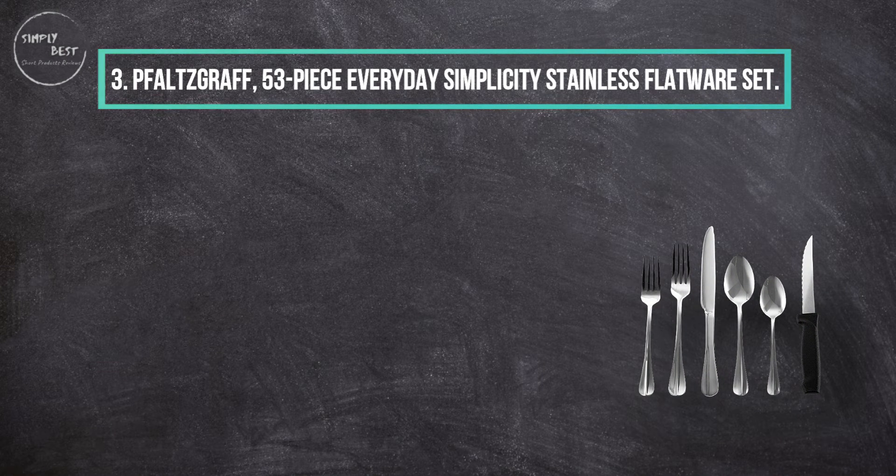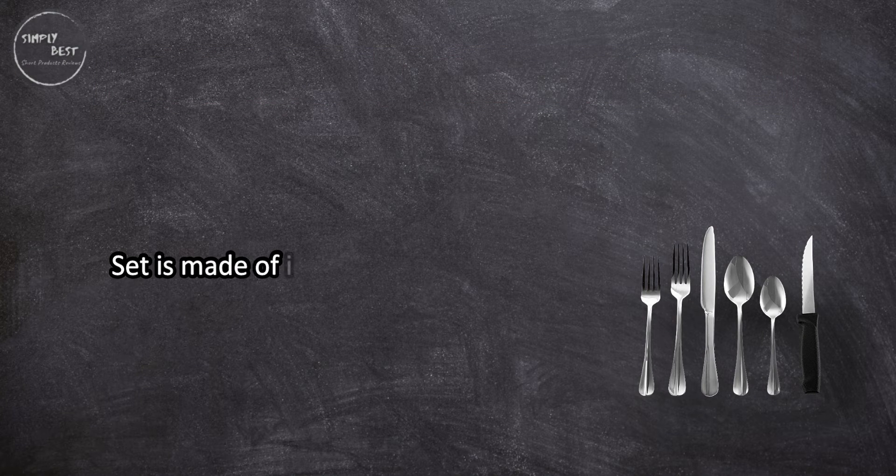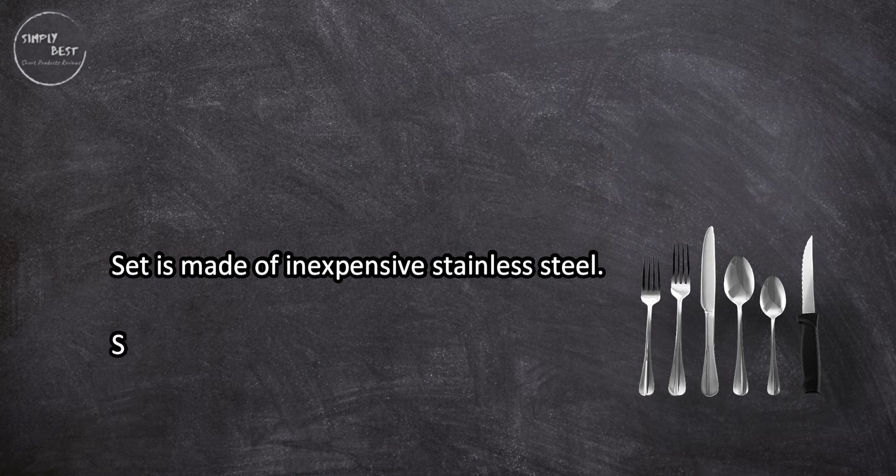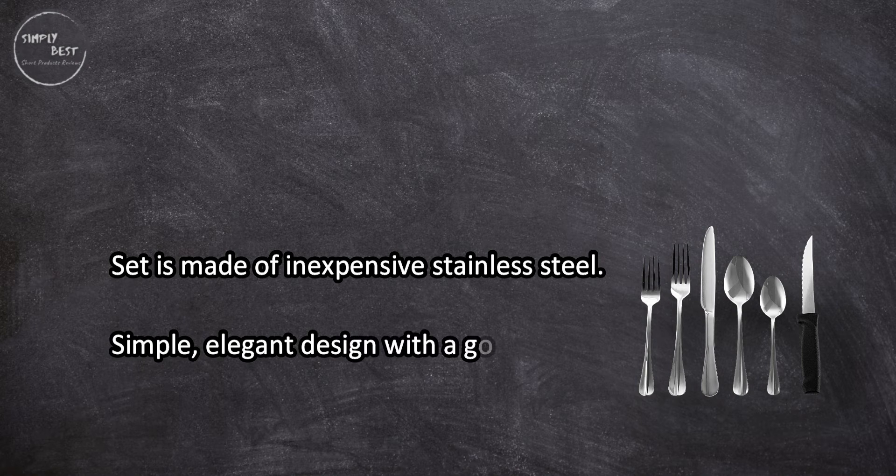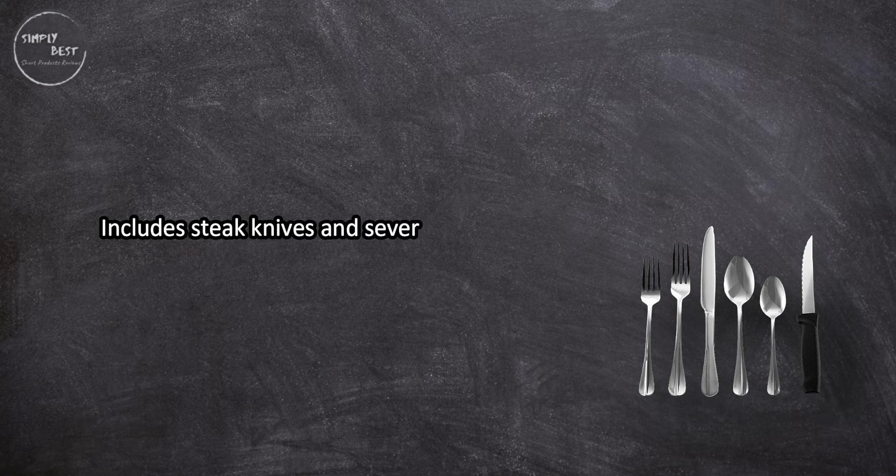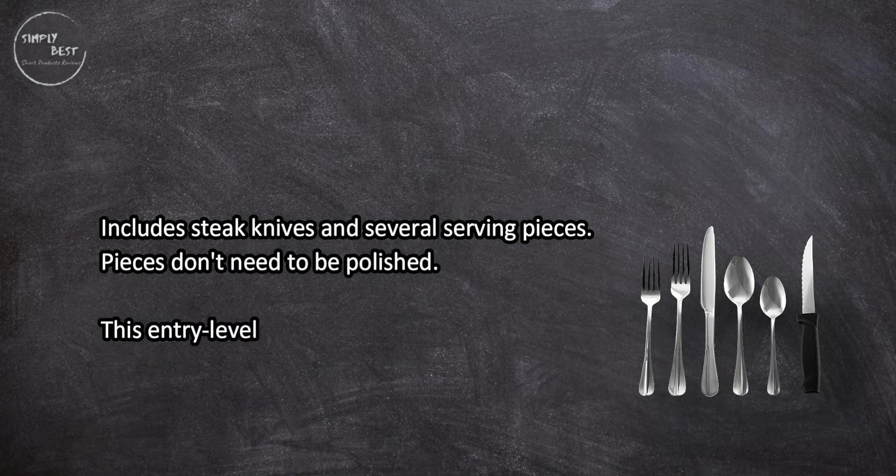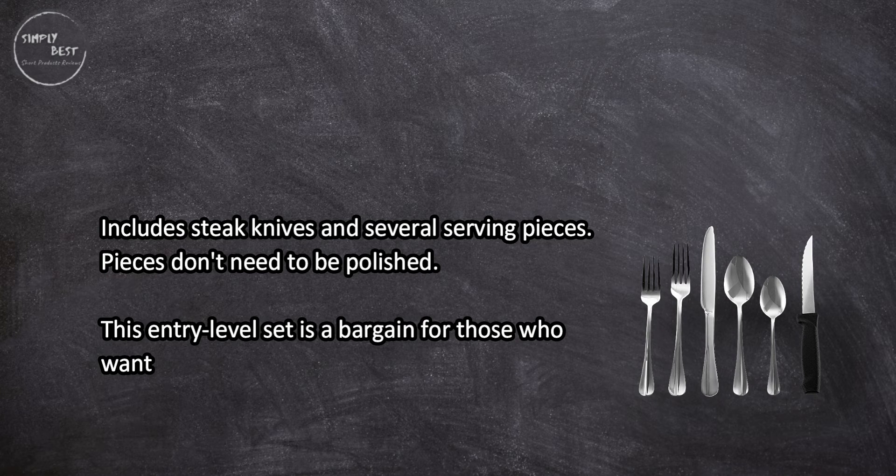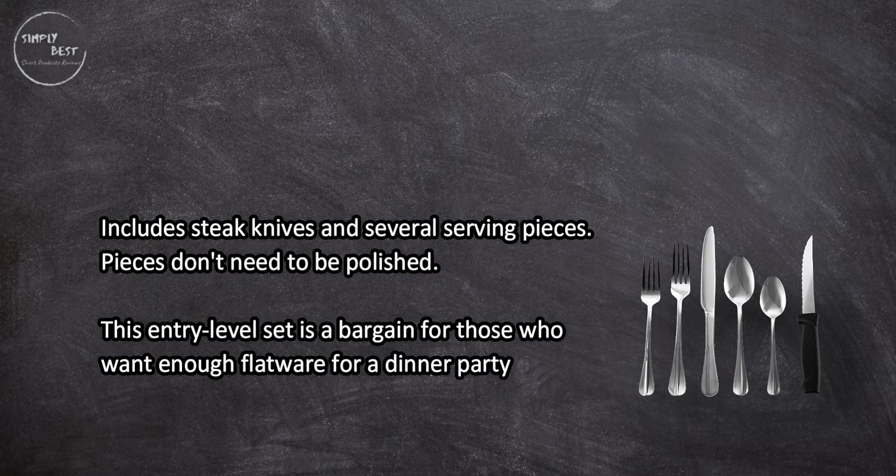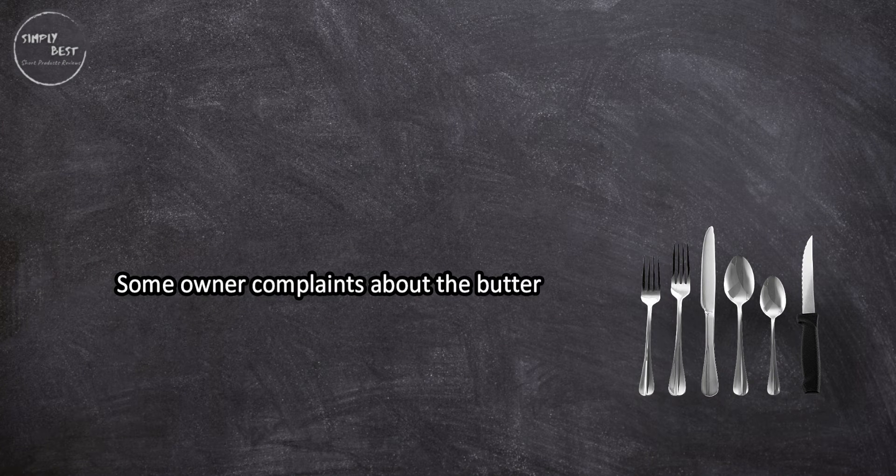At number three, Pfaltzgraff 53-piece Everyday Simplicity Stainless Flatware Set. This set is made of inexpensive stainless steel with a simple, elegant design and good weight. It includes steak knives and several serving pieces. The pieces don't need to be polished. This entry-level set is a bargain for those who want enough flatware for a dinner party on a budget. Some owner complaints about the butter knife and steak knife handles being too thin.